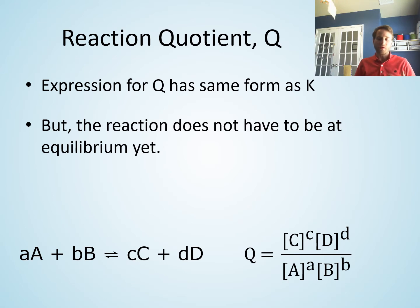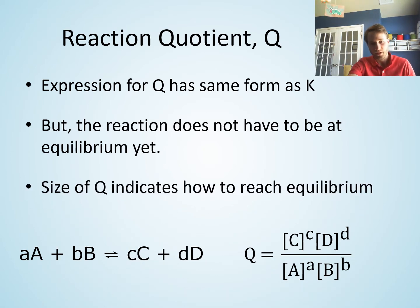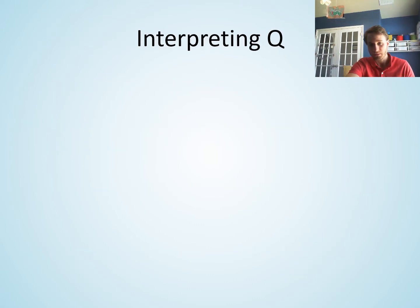K itself has a very specific number for a given chemical reaction — the equilibrium constant — and it does not matter what your initial concentrations were. Q, on the other hand, is just a number that depends on what the current concentrations of reactants and products are. The size of Q relative to K will tell us how a reaction is going to reach equilibrium, because every reaction will eventually reach equilibrium.